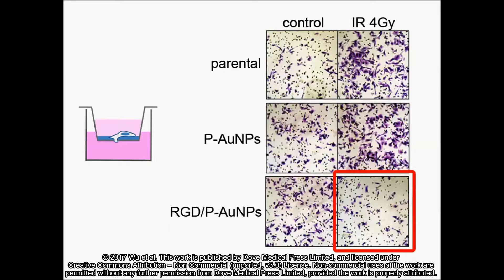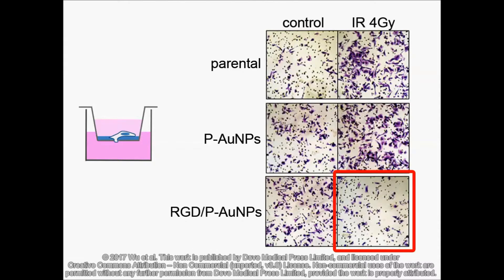To understand the suppressive effects on invasive activity, differential gene expression between the control group and treatment group was assessed. We found that the reduction of fibronectin and its downstream signaling may be involved in the suppression of invasive activity by RGD-conjugated gold nanoparticles.